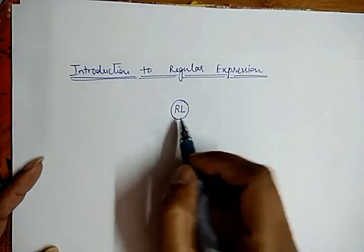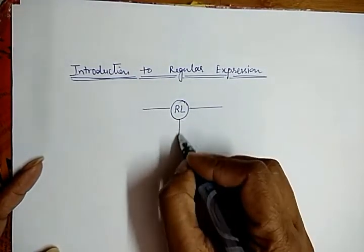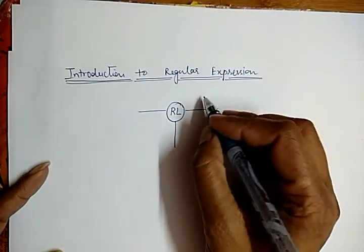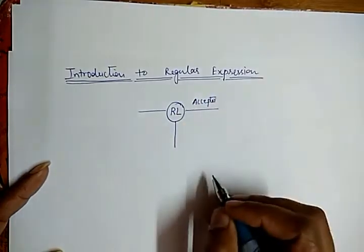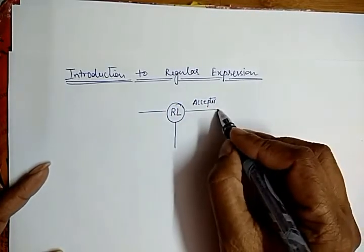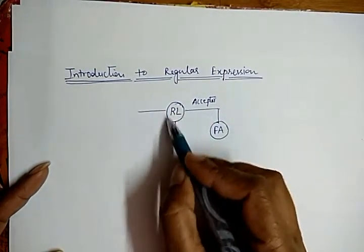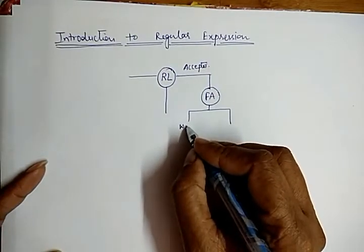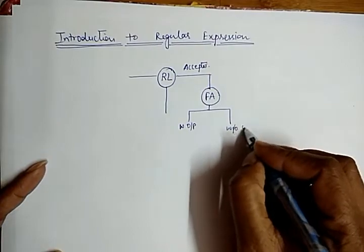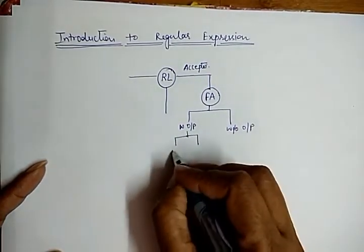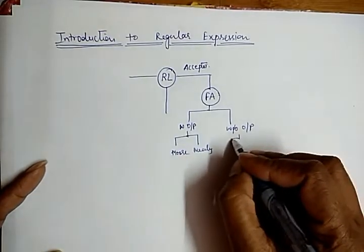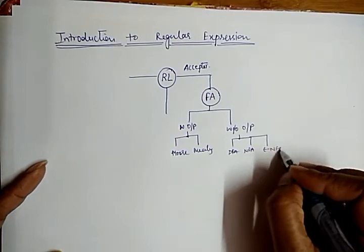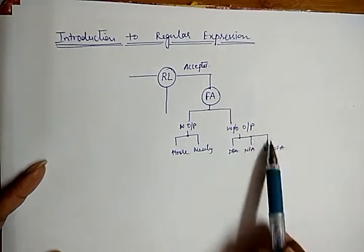If a language is a regular language (RL), it can be categorized into three areas. First, the regular language can be accepted by a finite automata, which is a mathematical structure. This finite automata can be further classified into two types: with output and without output. With output has two categories — Moore and Mealy — and without output has three categories: DFA, NFA, and epsilon-NFA.